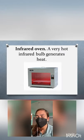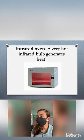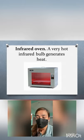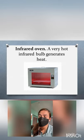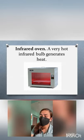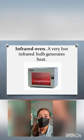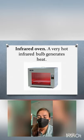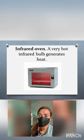Next, we have the infrared oven. It has a very hot infrared bulb that generates heat. There are two major benefits to using infrared radiation for cooking, most notably with grilling. Infrared radiation ensures food is heated via radiation and not convection, providing far more even and consistent heat across the entire grill.